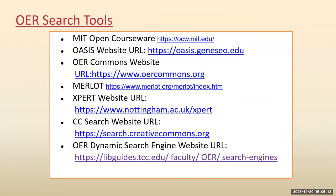OER search tools — what are the different OER search tools? The list includes: MIT Open Courseware, OASIS website, OER Commons website, Merlot Expert website, CC Search website, and OER Dynamic Search Engine website. When you click on MIT Open Courseware, you find n number of subjects based on their course contents. You can refer those, revise, reuse, remix — but don't forget to use their own licenses. Before downloading, before copying, before reusing, you are required to check the license.